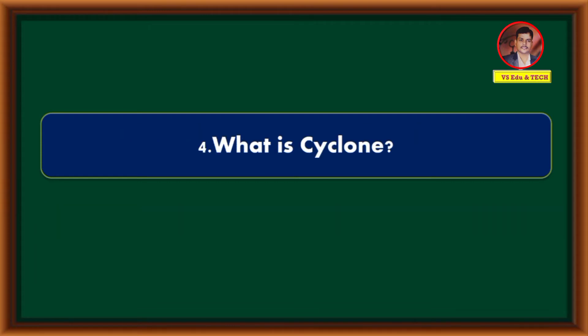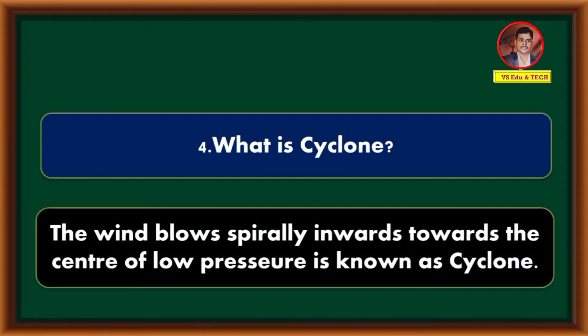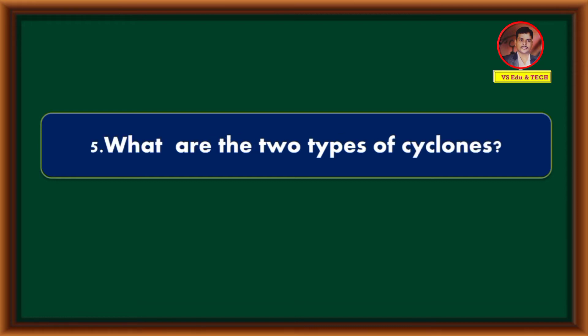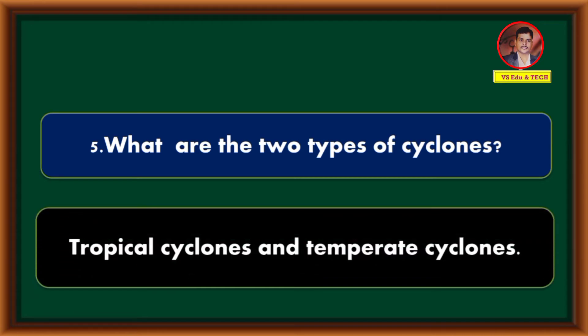What is a cyclone? The wind that blows spirally inwards towards the center of low pressure is known as a cyclone. What are the two types of cyclones? Tropical cyclones and temperate cyclones.